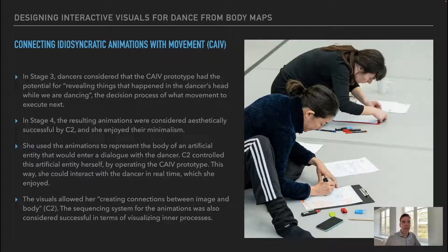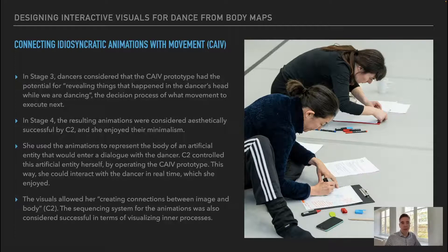Connecting idiosyncratic animations with movement: in stage 3, dancers considered that the CAIV prototype had the potential for revealing things that happened in the dancer's head while dancing — the decision process of what movement to execute next. In stage 4, the resulting animations were considered aesthetically successful by C2, who enjoyed their minimalism. She used the animations to represent the body of an artificial entity entering a dialogue with the dancer. C2 controlled this artificial entity herself by operating the CAIV prototype, interacting with the dancer in real-time. The visuals allowed her to create connections between image and body, and the sequencing system was also considered successful in visualizing inner processes.